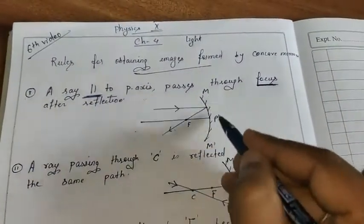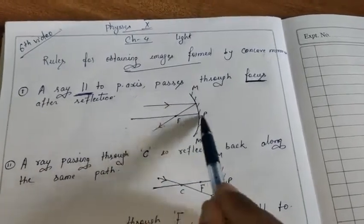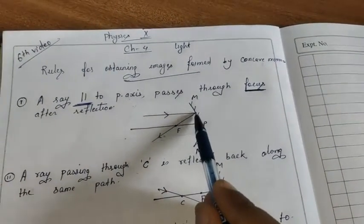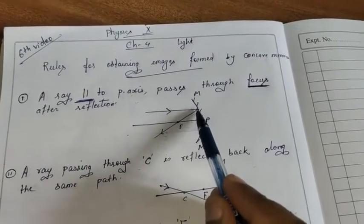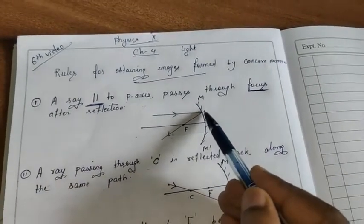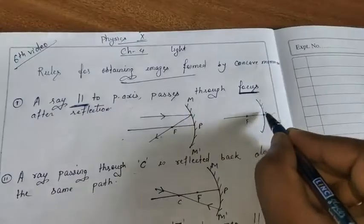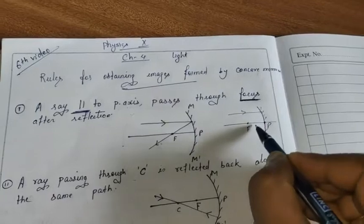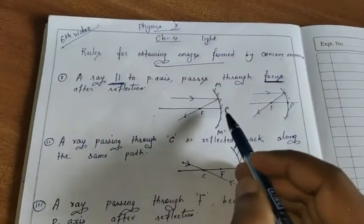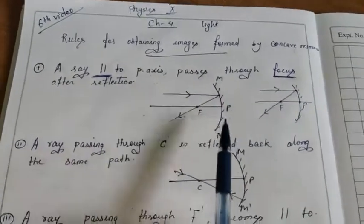Toh usko diagram mein banate hain. Ye raha humara M, M' — aperture of mirror. Ek ray parallel hai principal axis ke. Mirror se takraane ke baad reflection hoga, aur reflection hone ke baad woh focus se pass karega. Ray moving parallel to principal axis passes through focus after reflection.